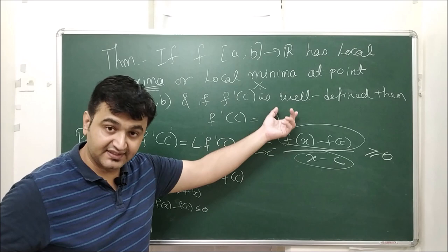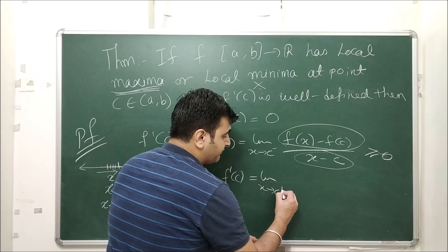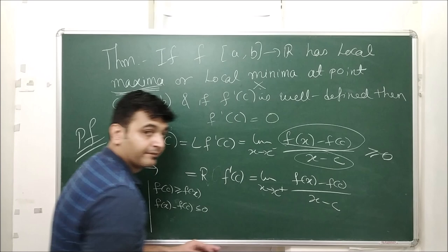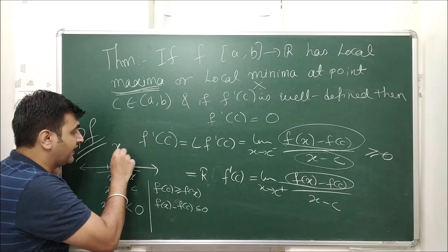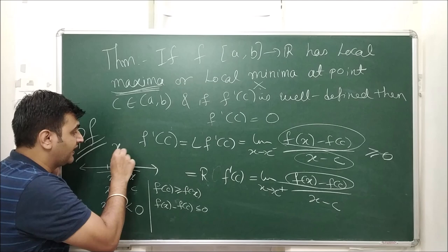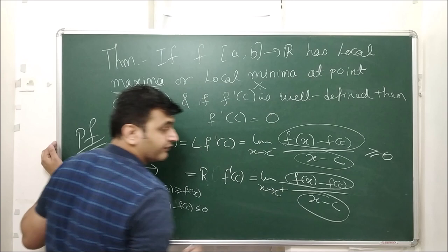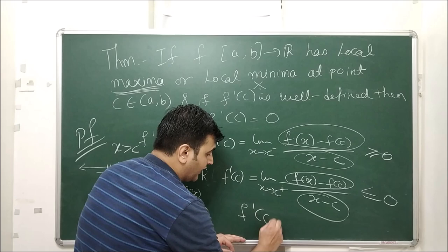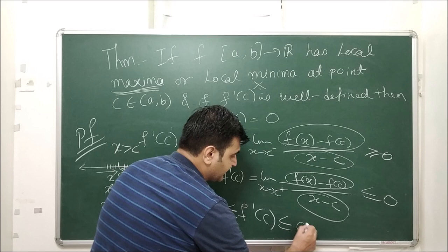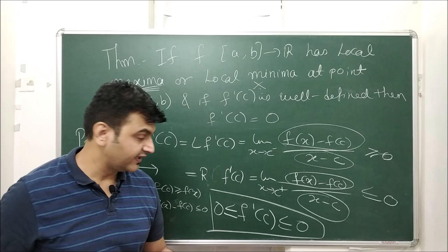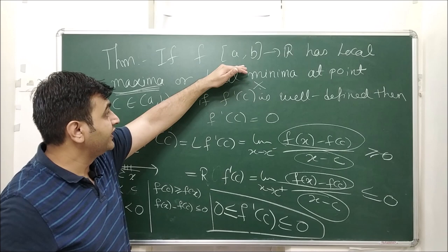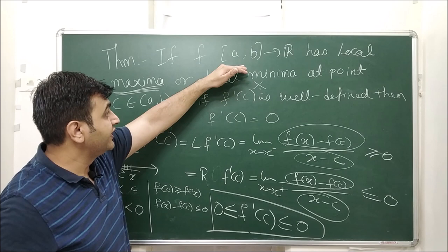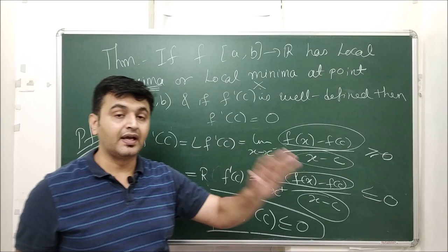The derivative also equals the right-hand derivative: lim(x→c⁺) [f(x) − f(c)] / (x − c). The numerator f(x) − f(c) ≤ 0 (still negative by local max condition), but now x > c so x − c > 0 (denominator is positive). Negative divided by positive gives a ratio ≤ 0, so the right-hand derivative is ≤ 0. Since f'(c) ≥ 0 from the left and f'(c) ≤ 0 from the right, and it is a real number sandwiched between two zeros, f'(c) = 0.